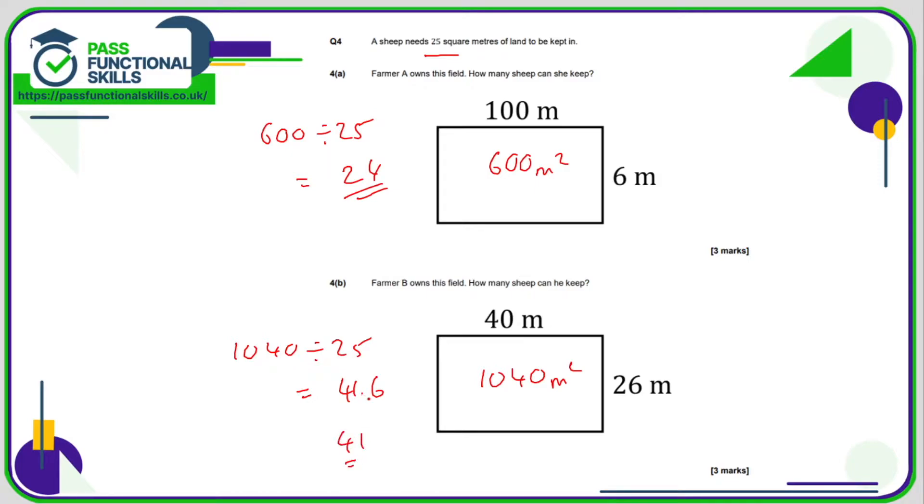So what we're going to have to do is round it down to 41 sheep. Now, 41.6 is closer to 42 than 41, but it doesn't matter because we have to round down. Because if we call it 42 sheep, that has exceeded the safe limit of 25 square meters.